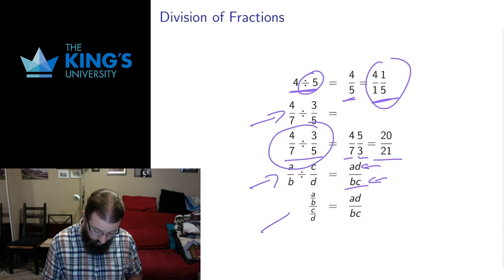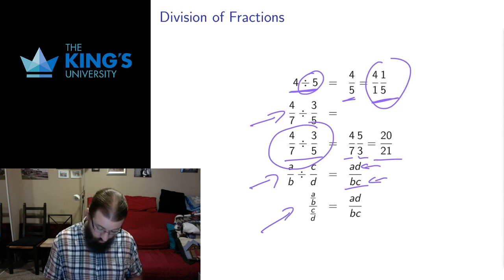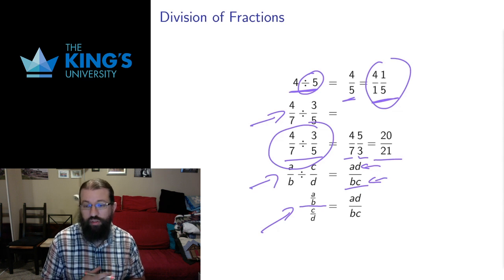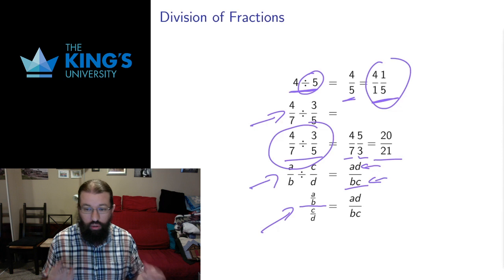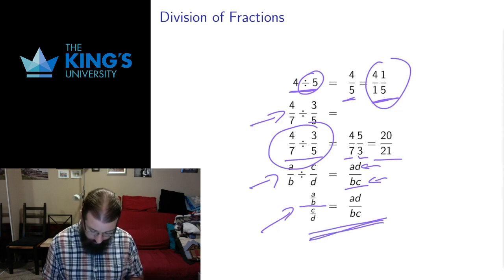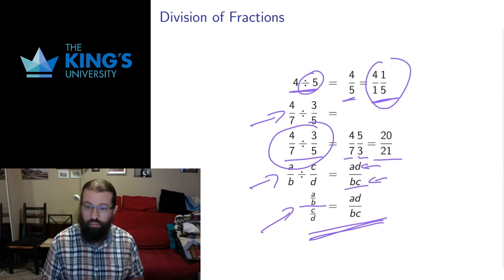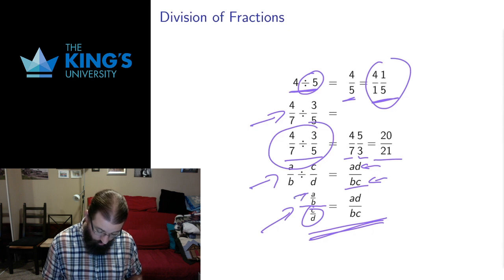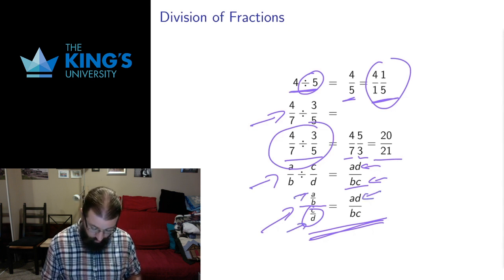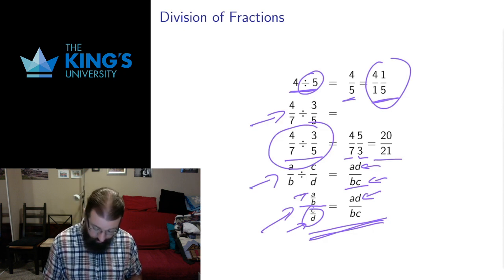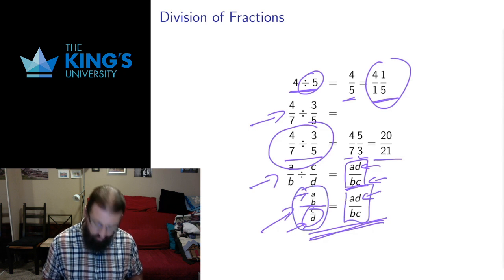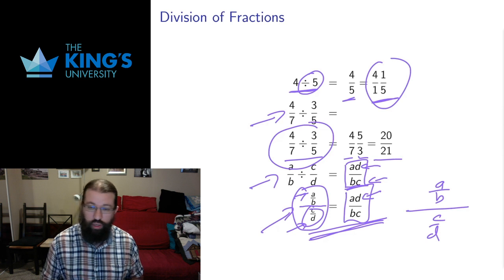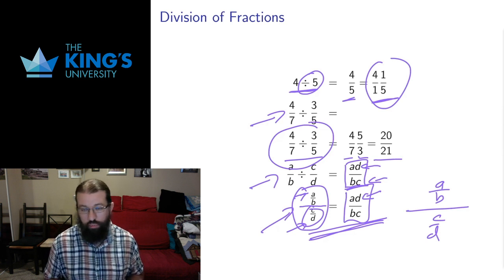One way division often shows up is as nested fractions — fractions inside fractions — written as (a over b) over (c over d). This rule for division of fractions gives a rule for simplifying nested fractions, which is a useful technique. By dividing by c over d, it's the same as multiplying by the reciprocal, giving a times d in the numerator divided by b times c in the denominator. So a nested fraction is just another way of writing that division, and division of fractions is the tool for simplifying and putting nested fractions into a nicer form.